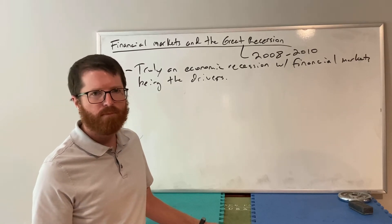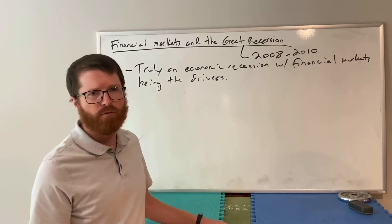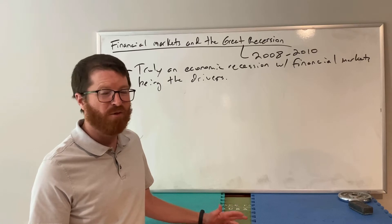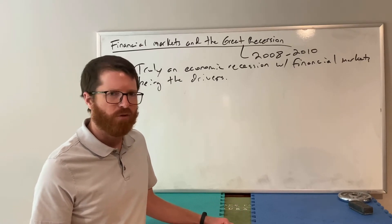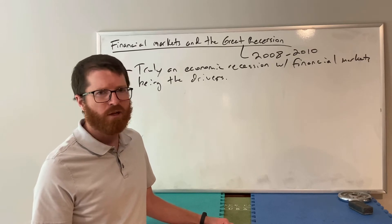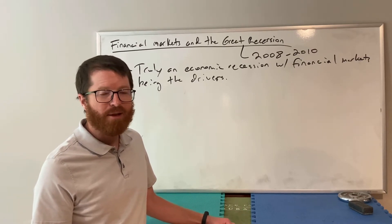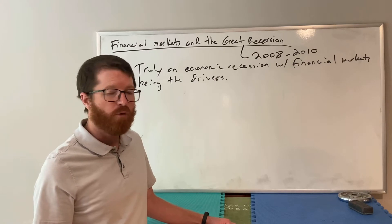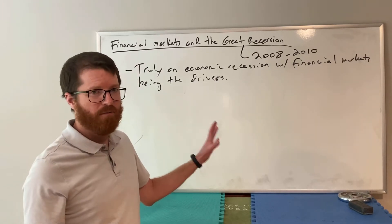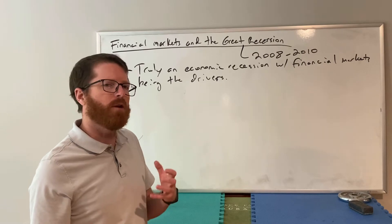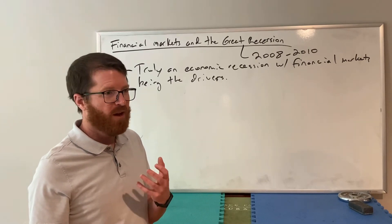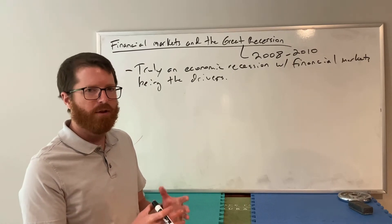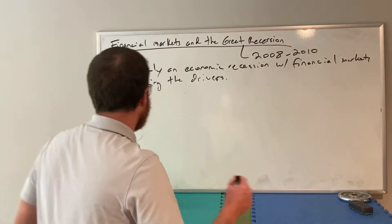This recession is also important because it's avoidable. If we had better policies we could have avoided it. The 2001 recession was partially caused by 9/11 - not really an economic event we as economics students could have improved. But this one we could have fixed. We're going to learn about the causes and resulting impacts of the Great Recession, and understand why general equilibrium theory is so relevant in discussing it.